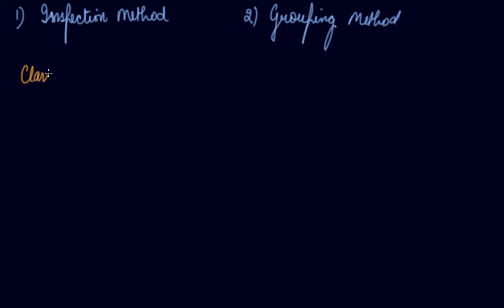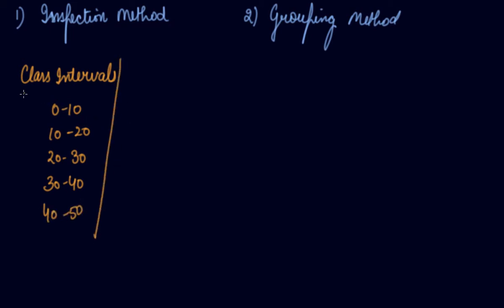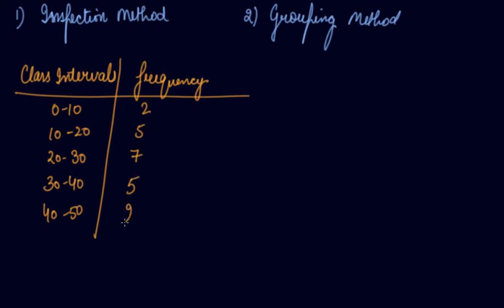First, let's take the class intervals: 0 to 10, 10 to 20, 20 to 30, 30 to 40, and 40 to 50. The corresponding frequencies are 2, 5, 7, 5, and 2. The highest frequency is 7, so the modal class is 20 to 30. We need to find the value of the mode which lies within this class, so we will use the formula.